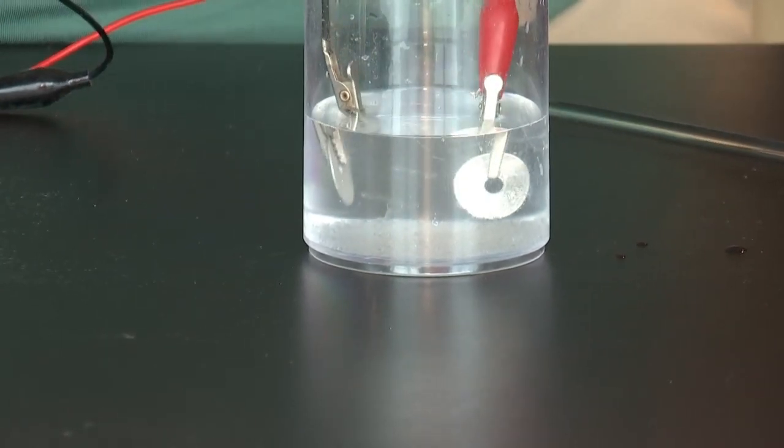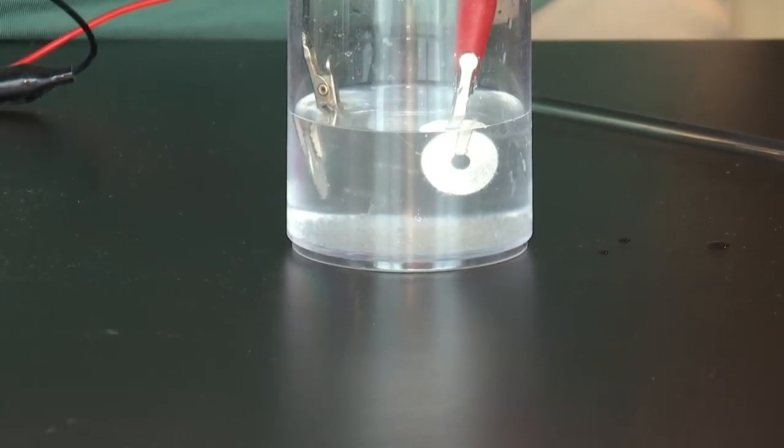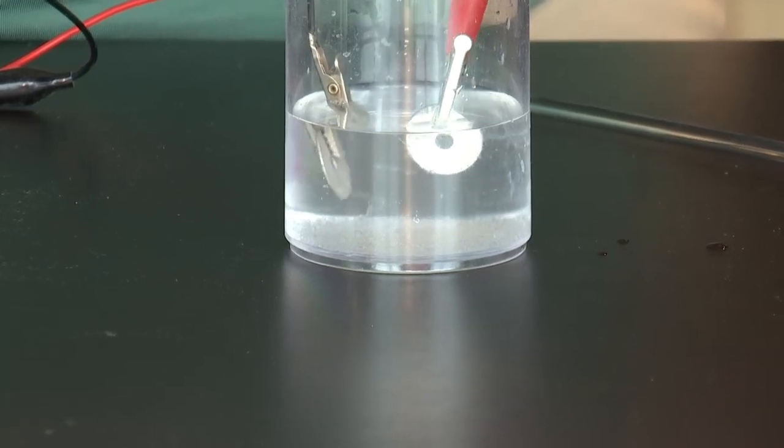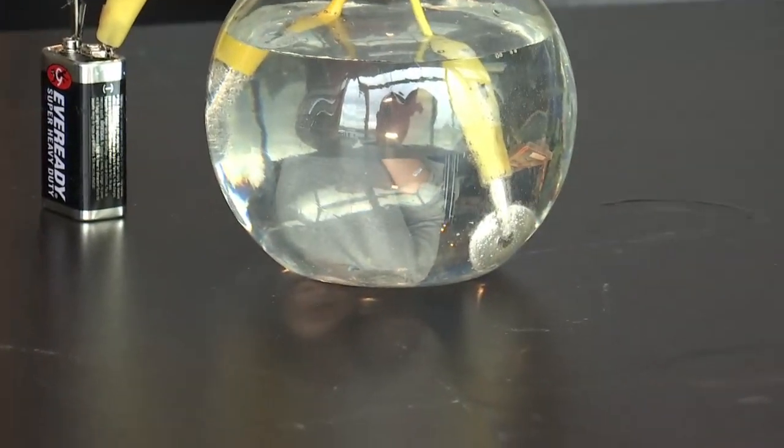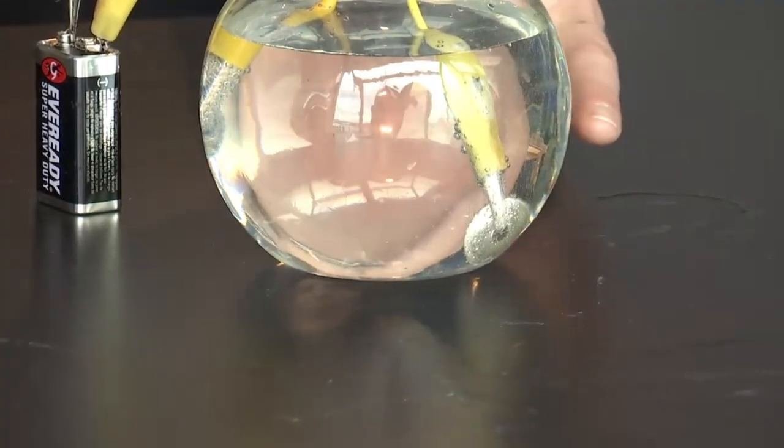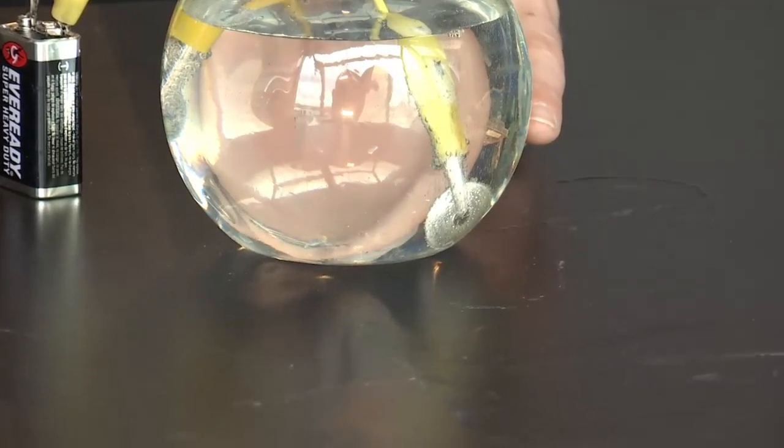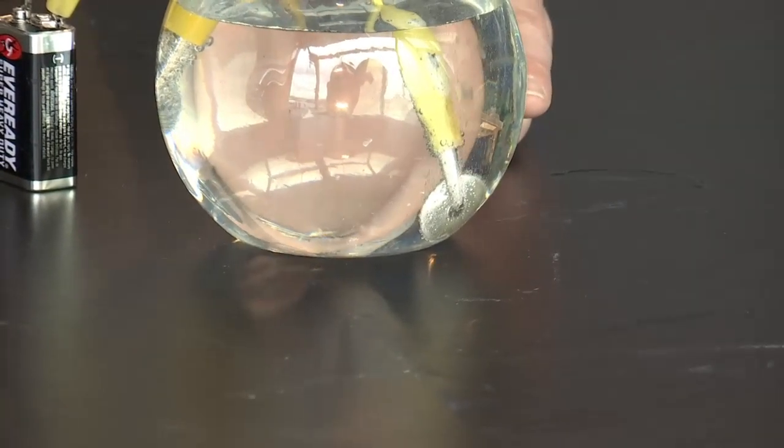So you might notice some bubbles coming off. Guess what that is? That would be the O of the H2O. The oxygen. So one side is making oxygen gas. The other side is producing hydrogen gas. And you might notice that one side is bubbling almost twice as much because of that H2. That makes sense.